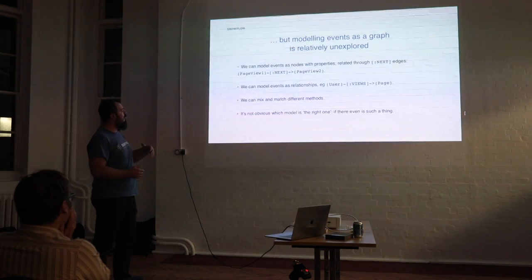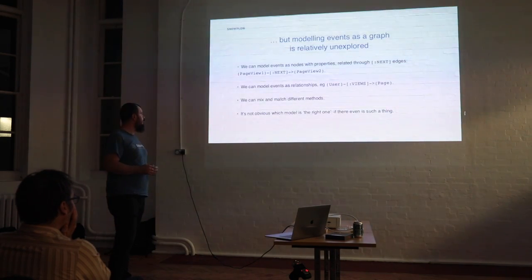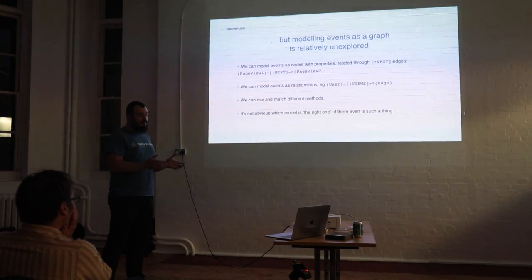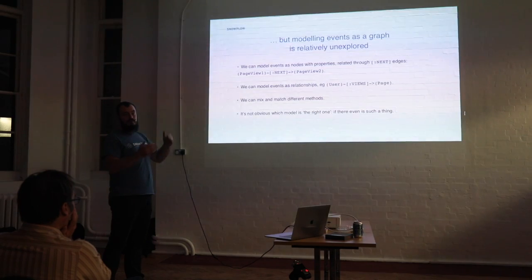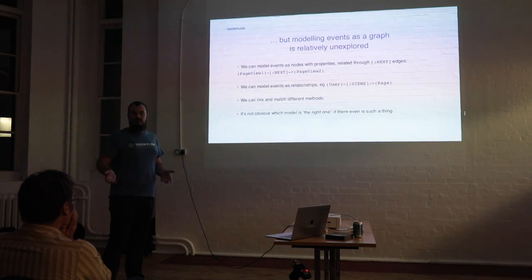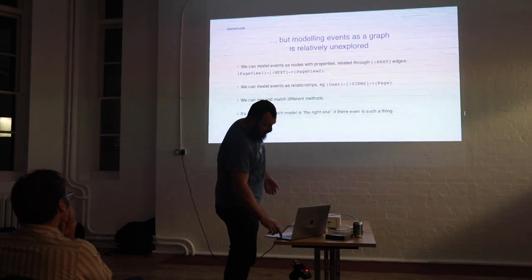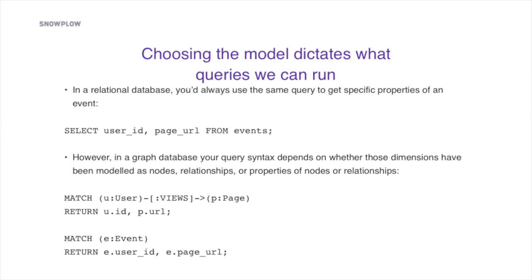Another approach is to deconstruct each event into its constituent parts, with each entity as its own node and relationships drawn between them. For a page view event, you might have a user node and a page node connected with a 'views' relationship. You can also mix models — choosing whether something like an email address is its own node or just a property on the user node. It's not obvious how to model events, and there isn't much research on the best approach. The usual advice is: model for the queries you want to write.